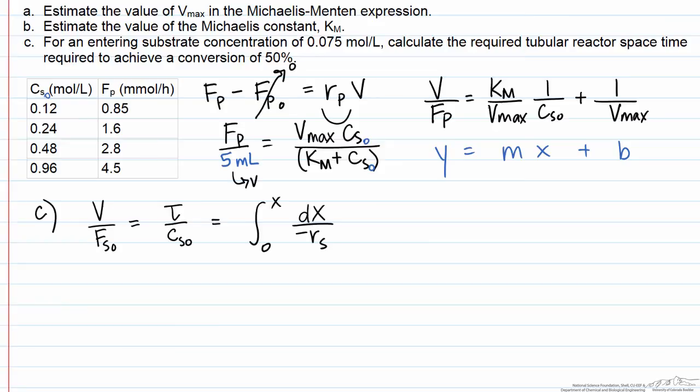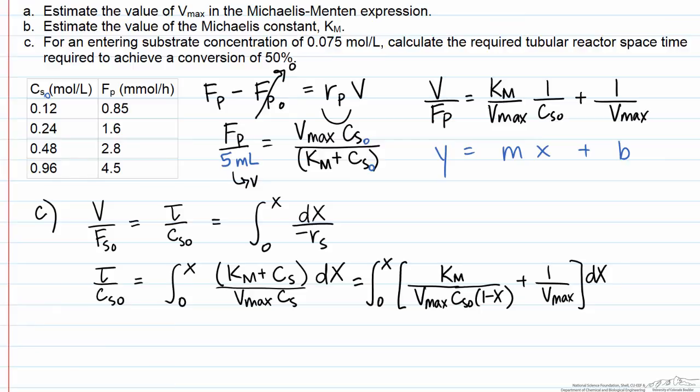This is what we actually want to solve for. We're given the inlet concentration of substrate of 0.075 molar, and now we just need to plug into the right-hand side of our expression. We already know the form of R sub S, which is just the Michaelis-Menten form, so we can plug that in here. Now we need to be able to integrate the concentration of substrate with respect to conversion. We can separate the two additive terms here, and we'll get a Km over Vmax Cs, where the concentration of substrate is equal to the initial concentration of substrate times 1 minus x. That's based on the fact that this is a liquid phase reaction, and therefore the volumetric flow rate won't be changing during the reaction because it's an incompressible fluid.